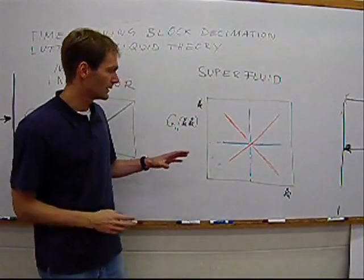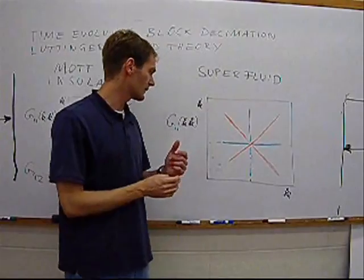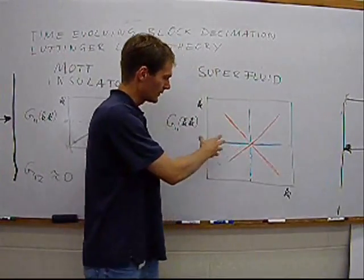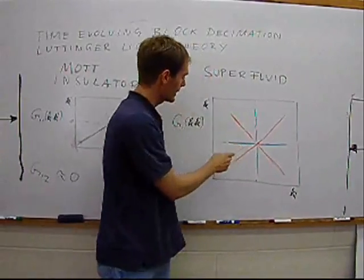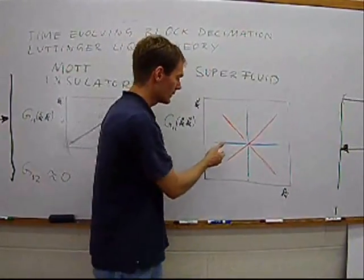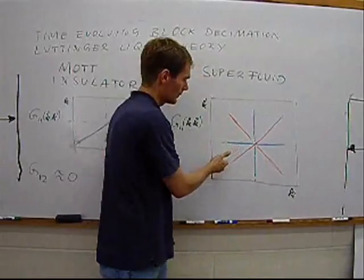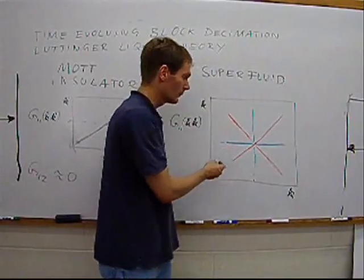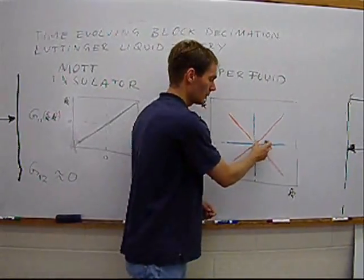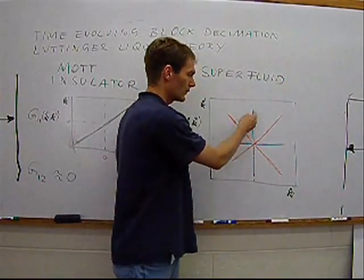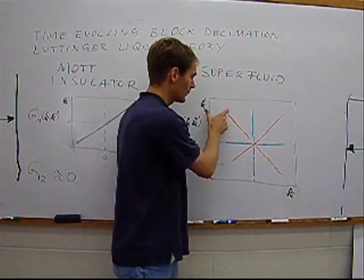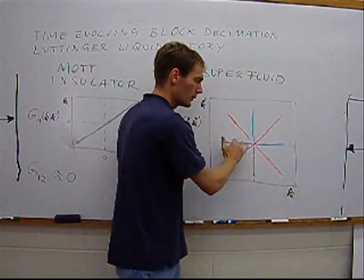For the superfluid phase, we find several features in these noise correlations. One is a pairing contribution for k equaling minus k prime. Then you find a Hanbury Brown-Twiss correlation along k equaling k prime. And then you find anti-correlations between the depletion of the condensate and the condensate itself, leading to negative contributions along k, k prime and zero, and zero and k.